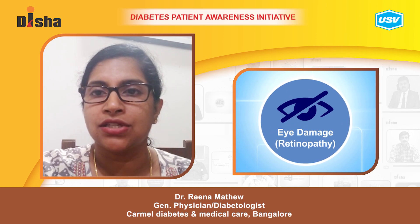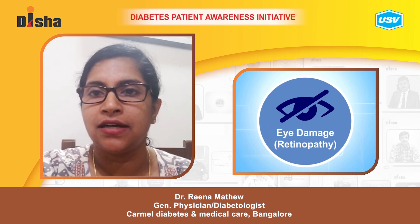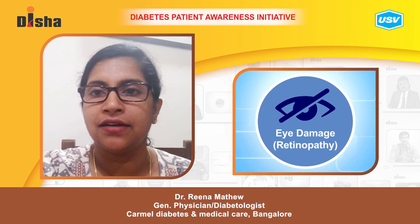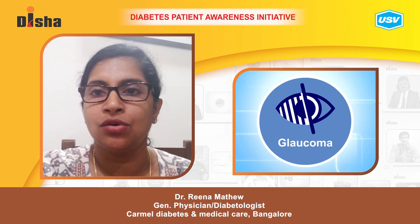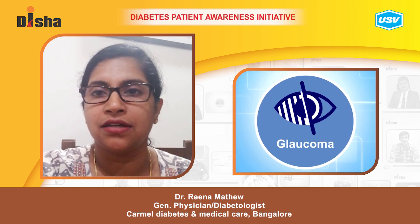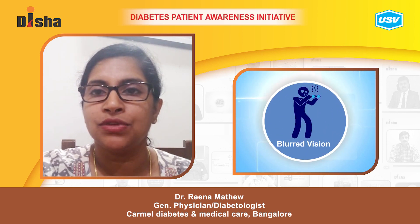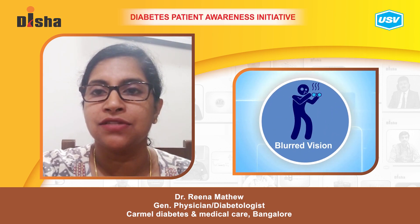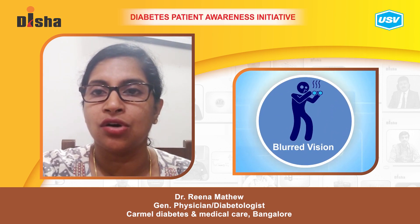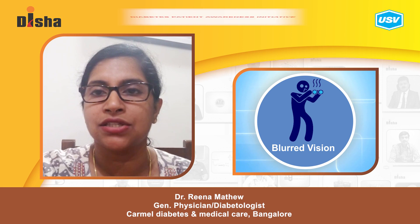The three major complications in the eye are retinopathy, glaucoma, and cataract. Blurring of vision can be due to high blood sugars or because of diabetic-related complications.